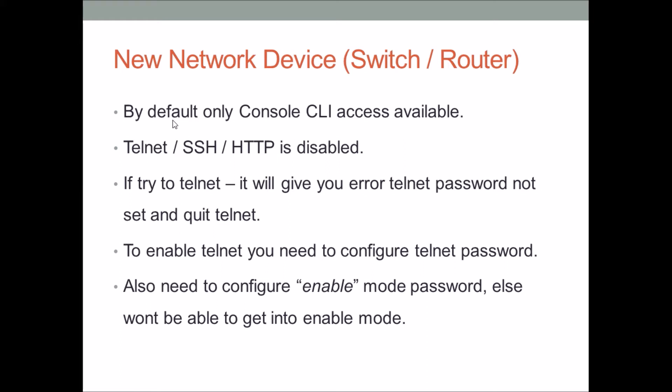Cisco IOS has three different modes: user mode, enable mode, and global configuration mode. User mode is where you connect by default — it's a simple mode with no real power over the device. From user mode you move to enable mode, which is a very powerful management mode for the device. The third is global configuration mode, where you make all configuration changes. It's very important to secure your enable mode.